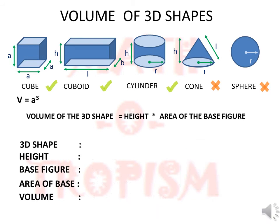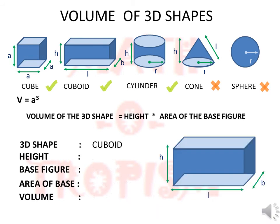Now for a cuboid. A cuboid has a rectangle as its base. Assuming the length is L, the breadth is b, and the height is h, the volume of the cuboid will be equal to height...